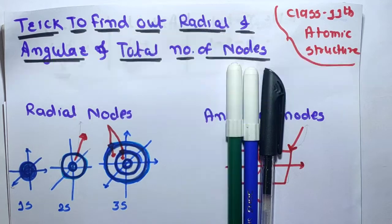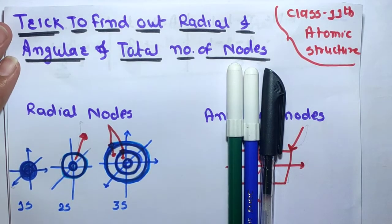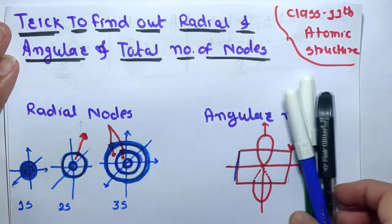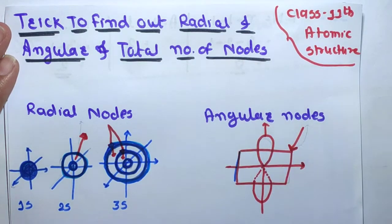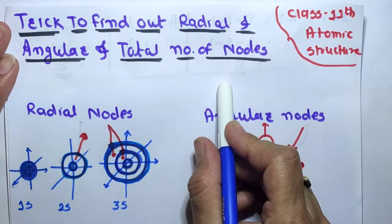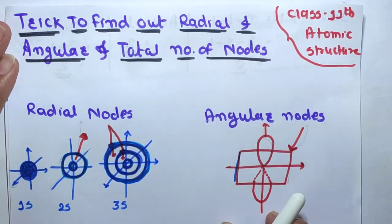Hello students, welcome to my channel. In this channel I will teach chemistry and maths in the simplest way. Today's topic is a trick to find out radial, angular and total number of nodes in the orbital. Now let's start the session.